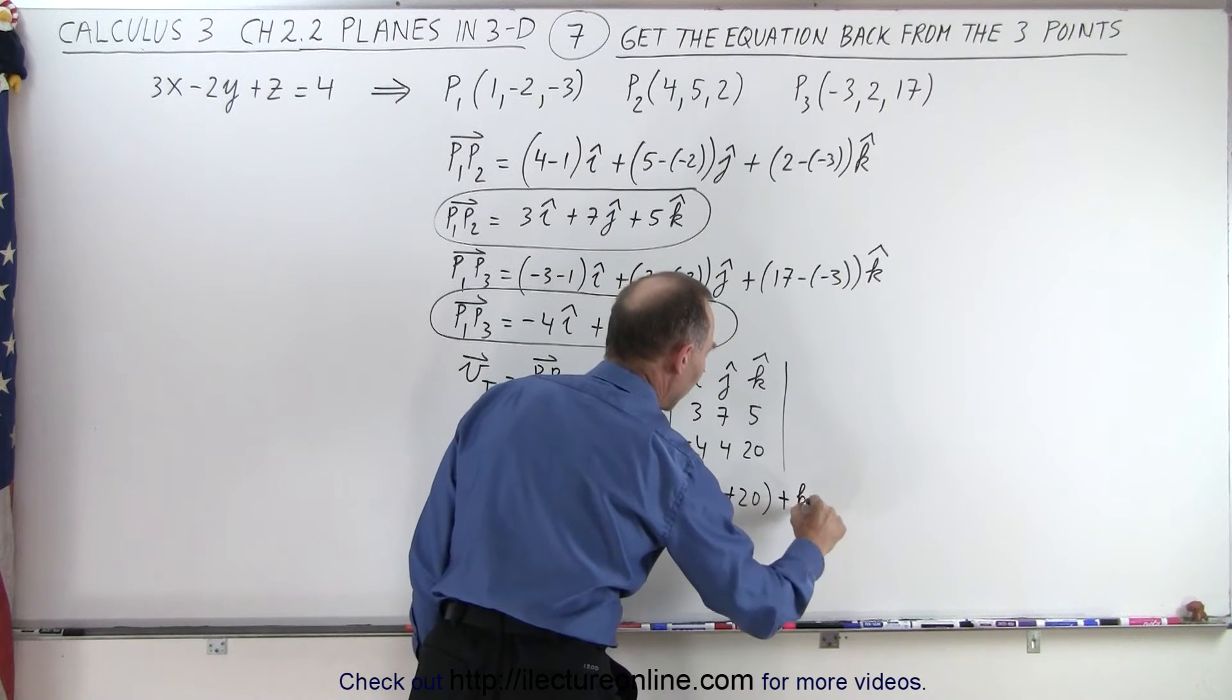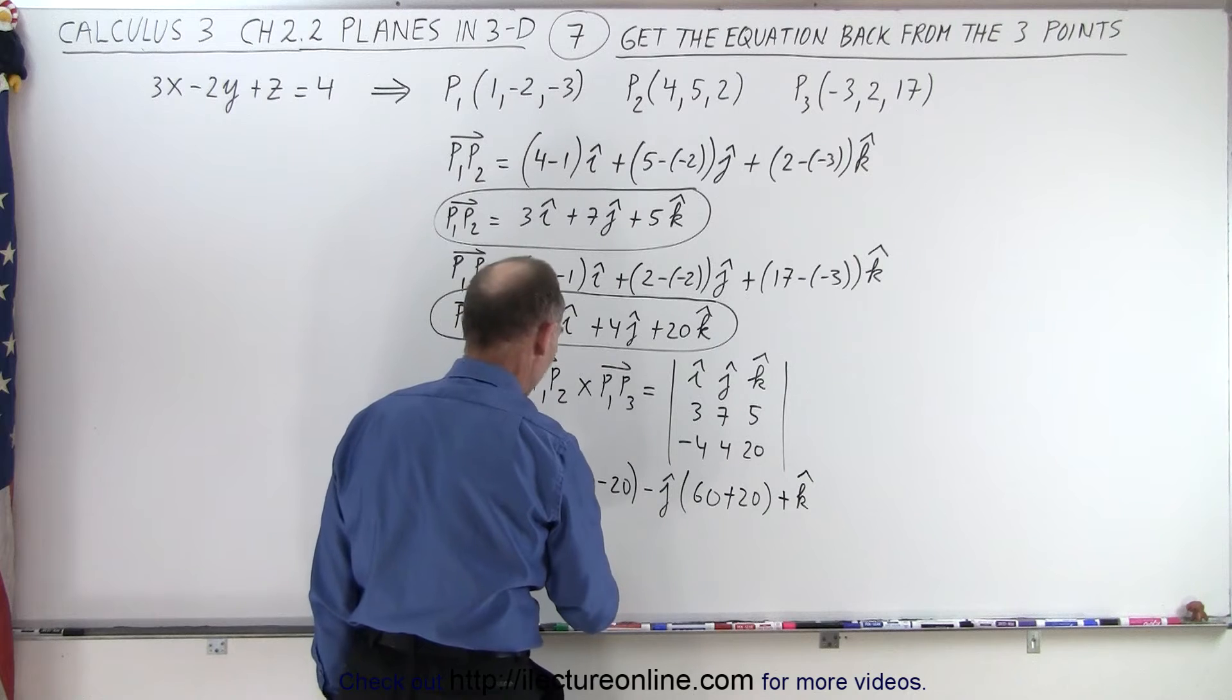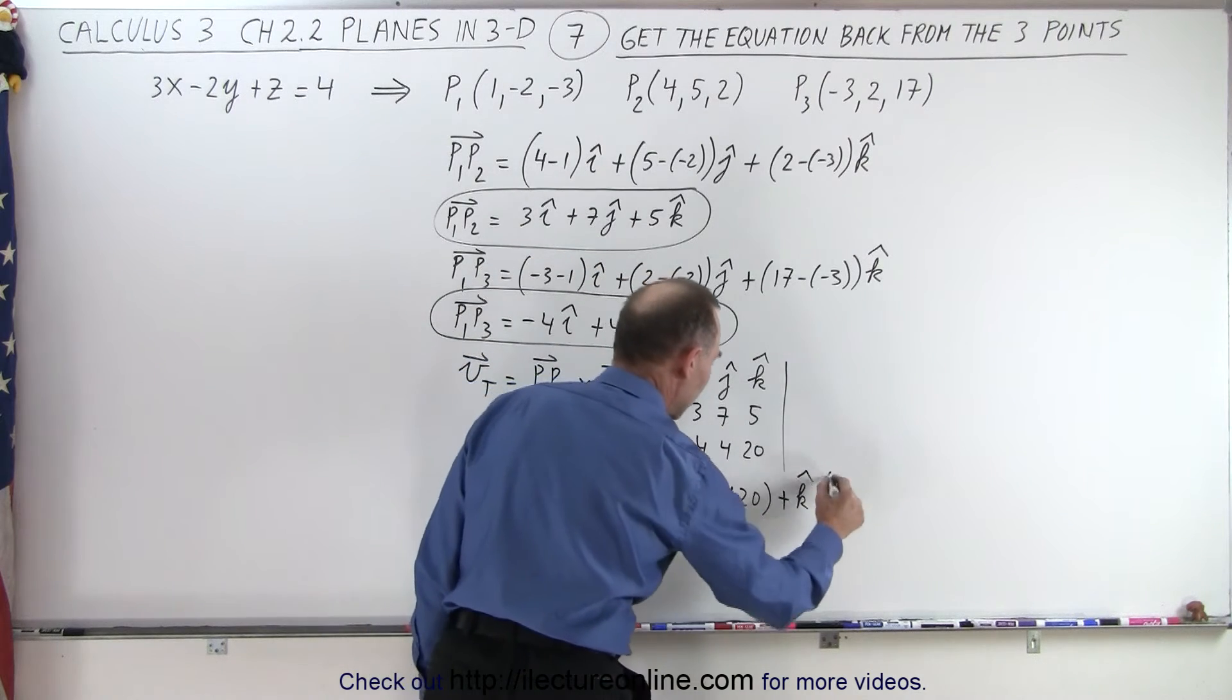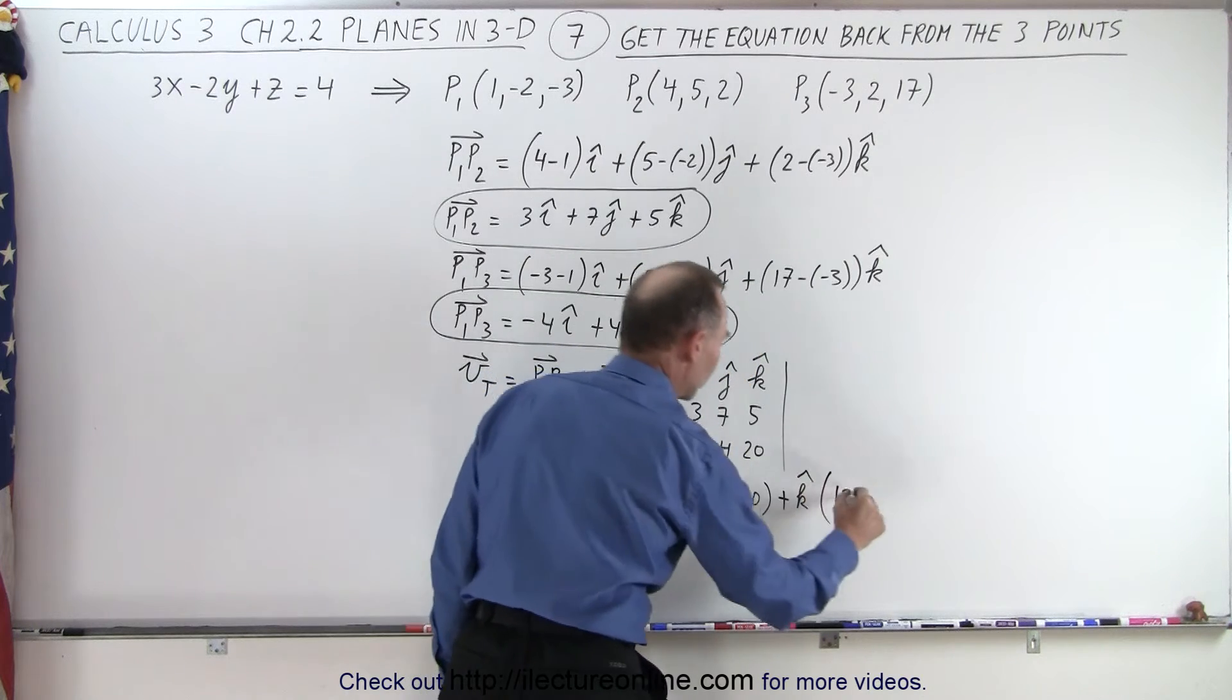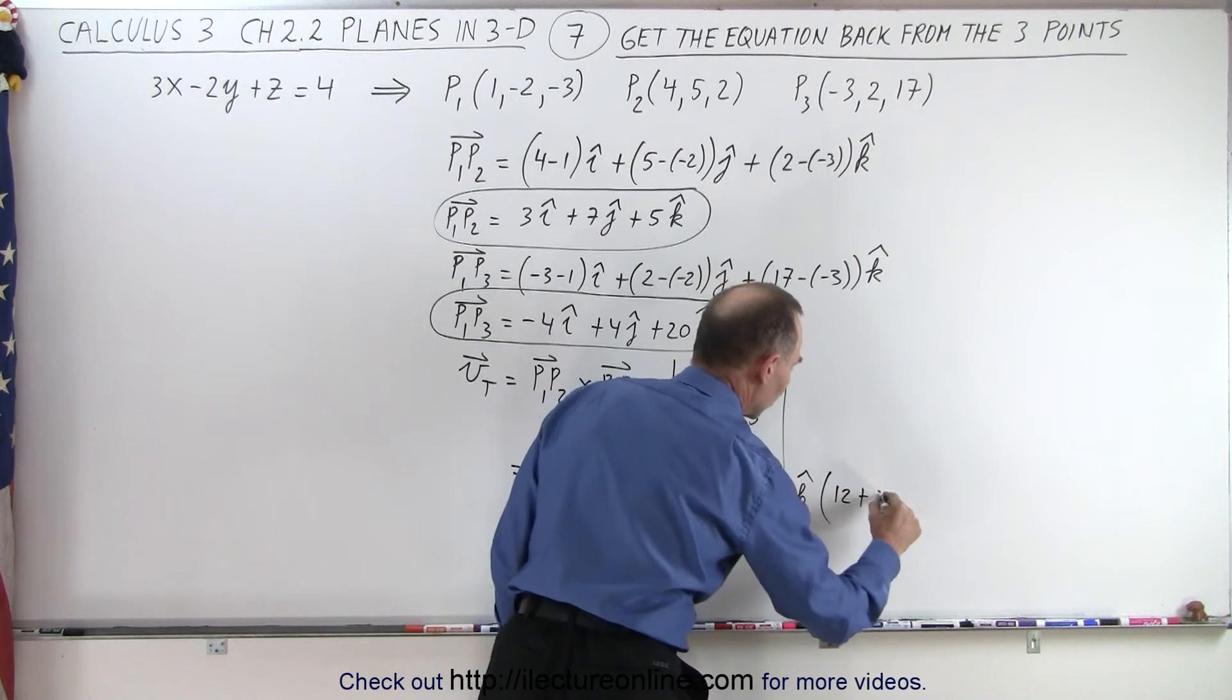and plus k, notice we have alternating signs, plus i, minus j, plus k, and here we have 3 times 4, which is 12, and minus times a minus, which is plus, 4 times 7, which is 28.